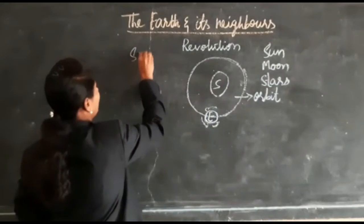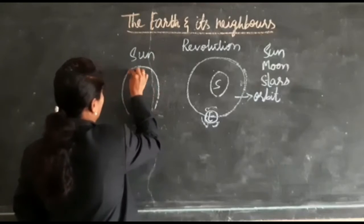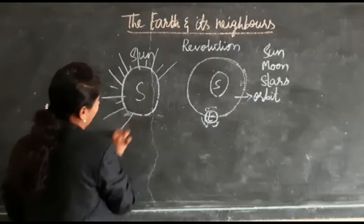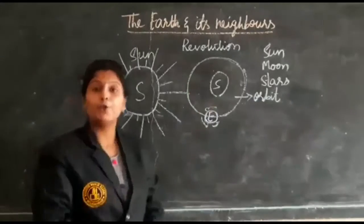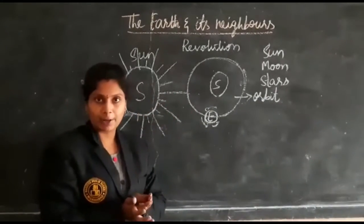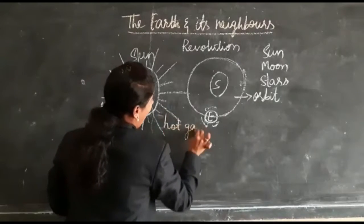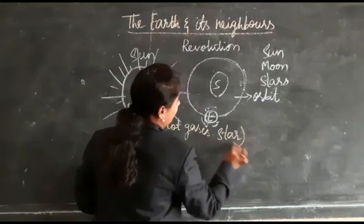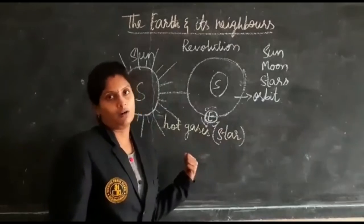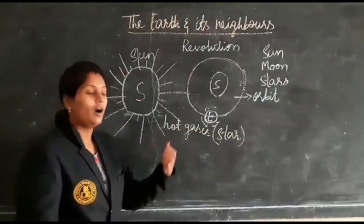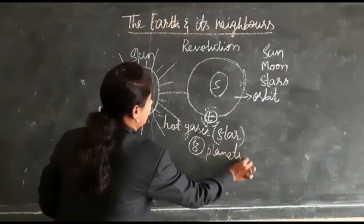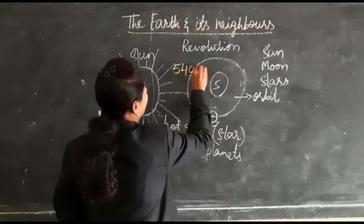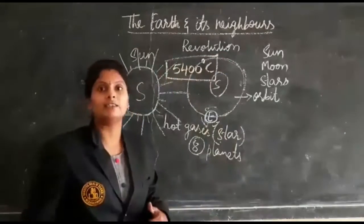First, coming to the sun. Sun is a very huge ball and it is made up of hot gases. Sun is a star — it is a very huge ball, it contains very hot gases, and it gives light to all 8 planets. All planets are getting light from the sun only.